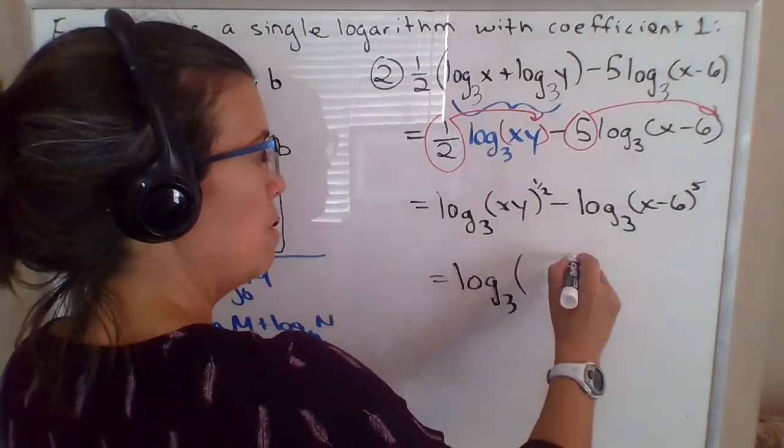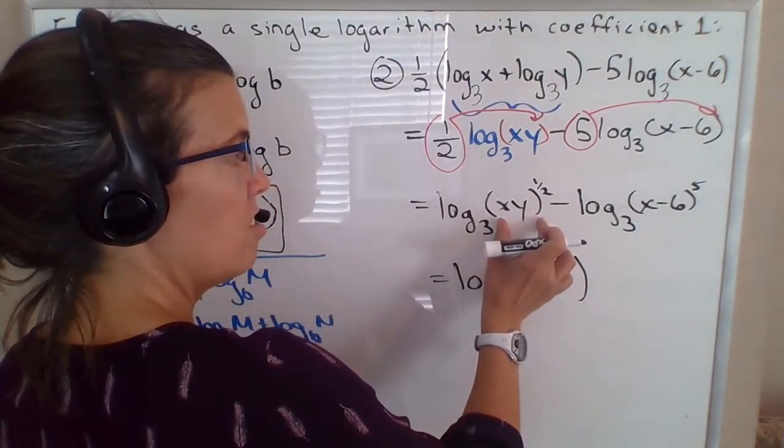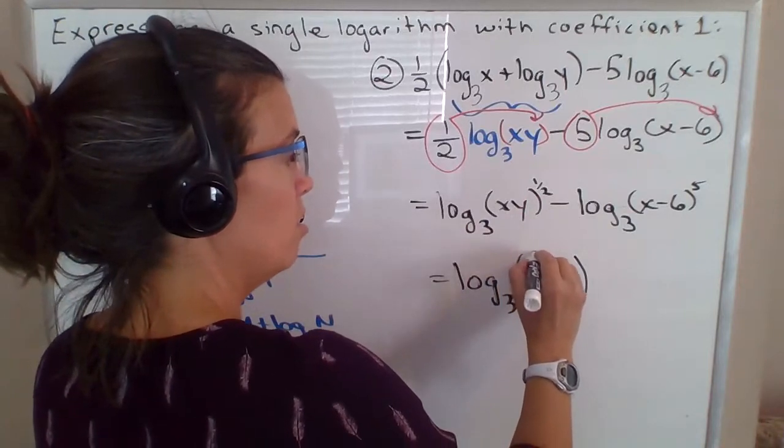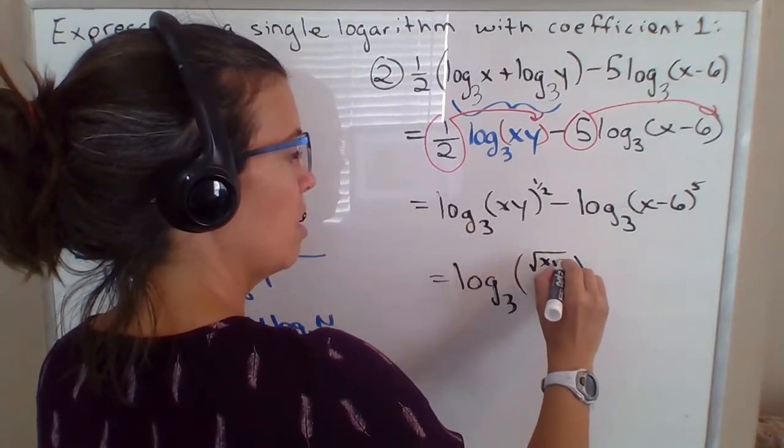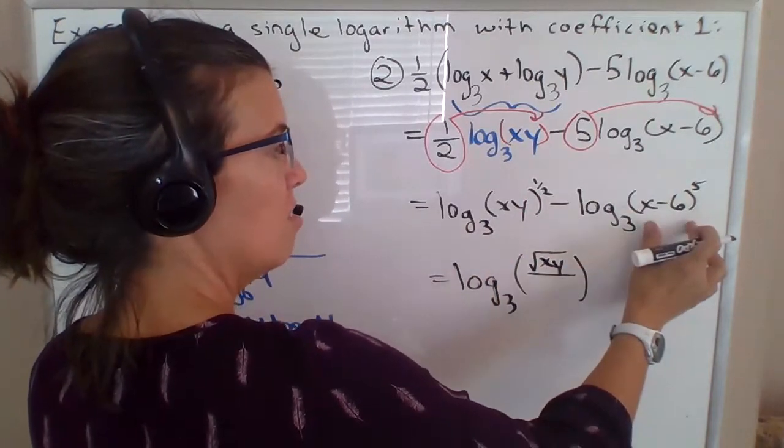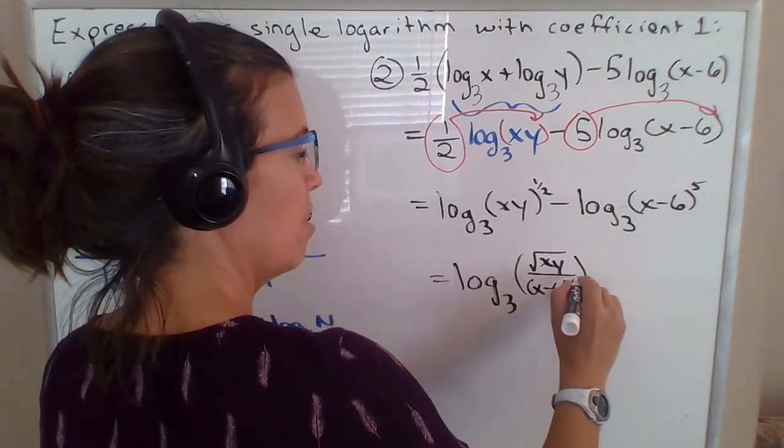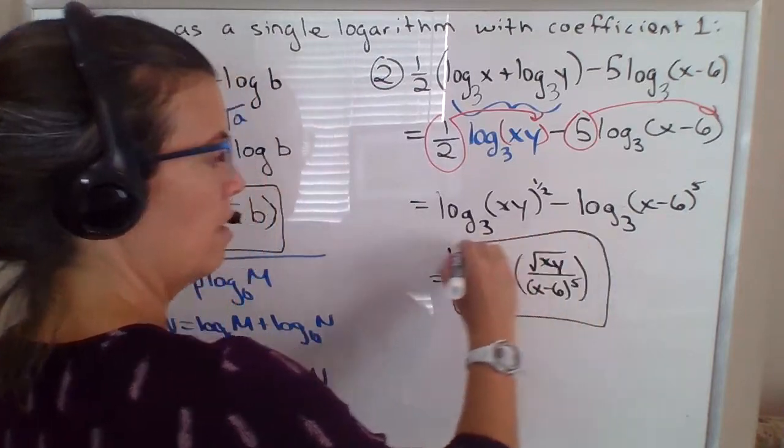So this is going to be log base three of this goes on top. And I'm going to go ahead and change that one half power to a square root of x times y. And this goes on the bottom, x minus six to the fifth. And that's your final answer.